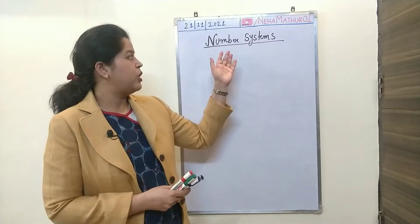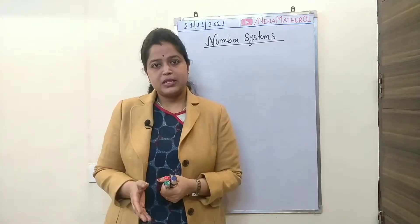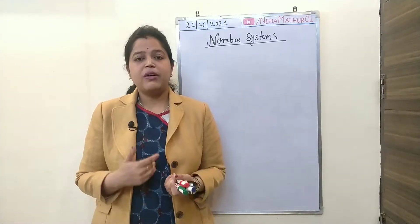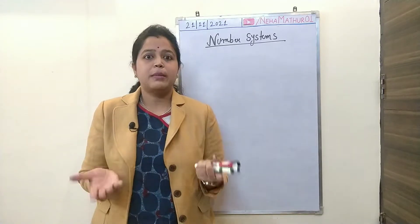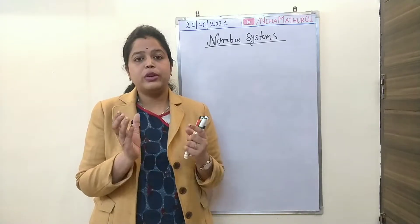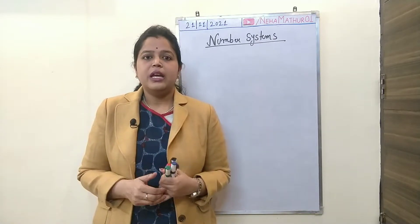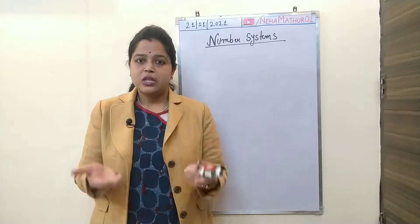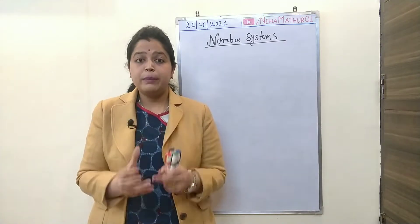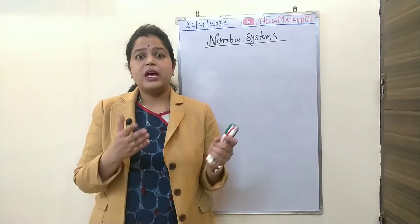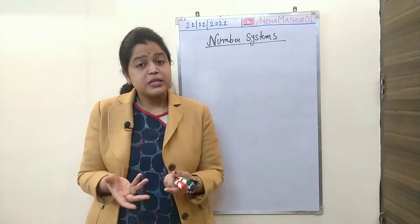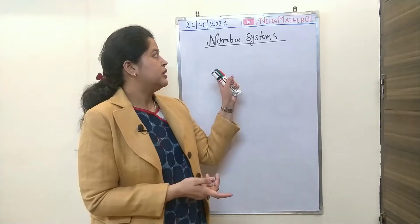Today's topic is number system. A number system is basically a set of values that is used to represent a quantity. In computers, for example, if I want to represent the number of students present in my class, that means a specific quantity — I will have to take a proper number to represent it. Similarly, if I want to represent the number of subjects in your present semester, I will have to use an appropriate number. So in computers, we have many situations where we need to represent information in terms of a specific quantity, and for that we use number systems.